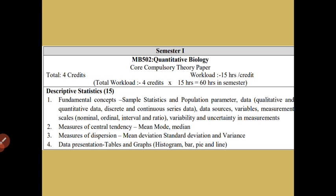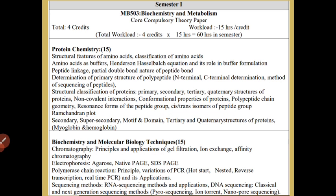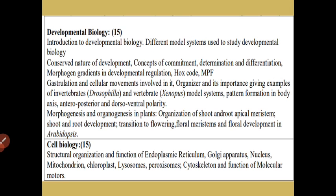Next, MB502 Quantitative Biology covers descriptive statistics, inferential statistics part one, inferential statistics part two, and probability and probability distribution. MB503 Biochemistry and Metabolism covers protein chemistry, biochemistry and molecular biology techniques, developmental biology, and cell biology.